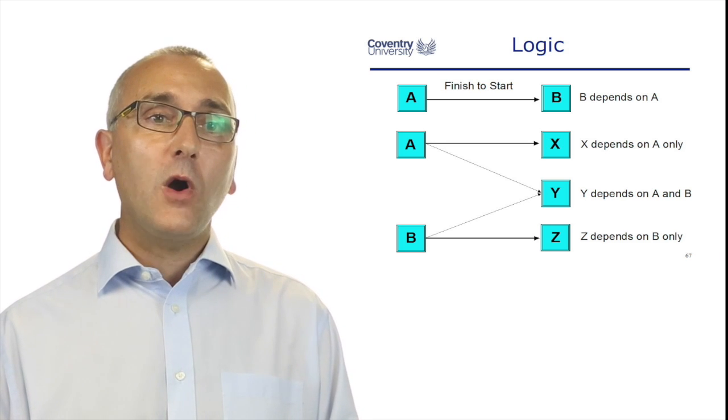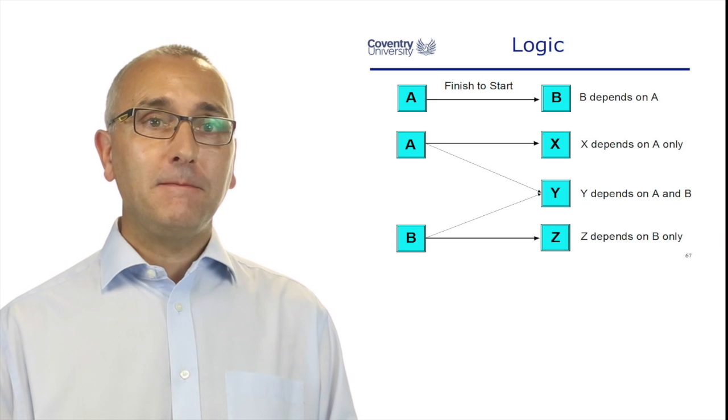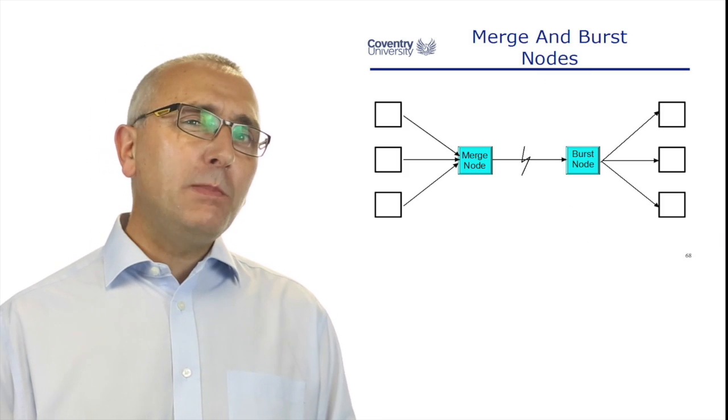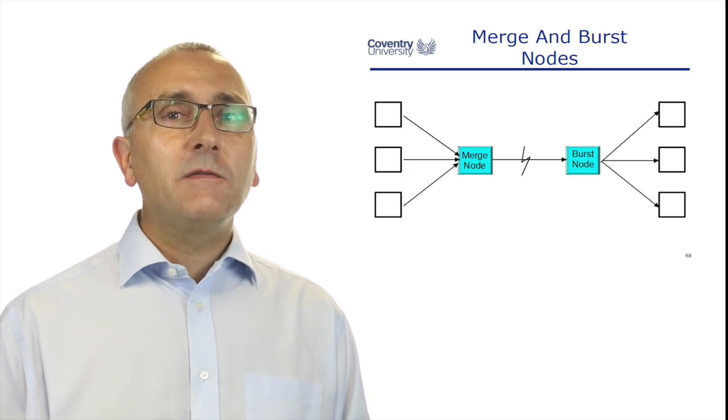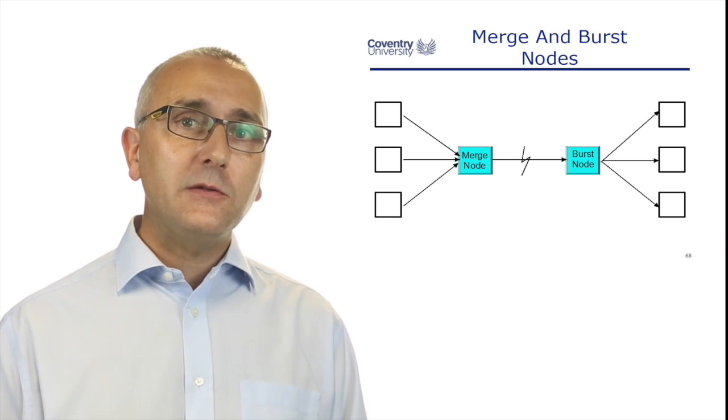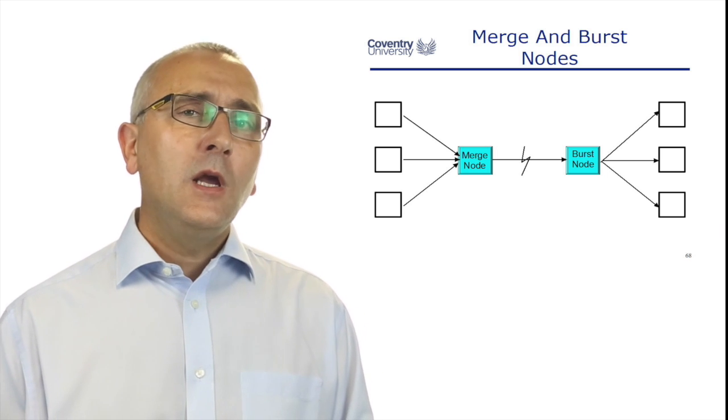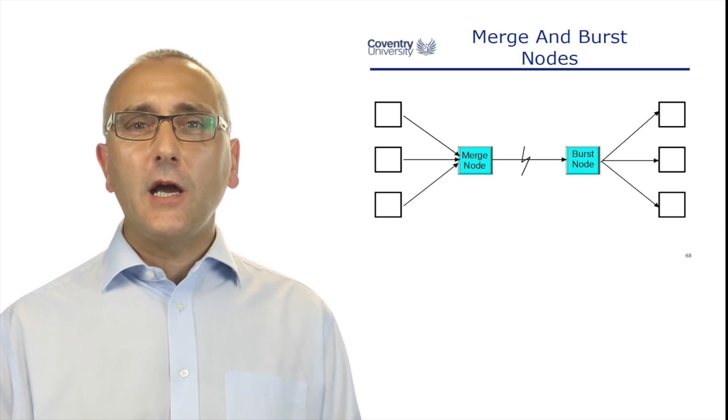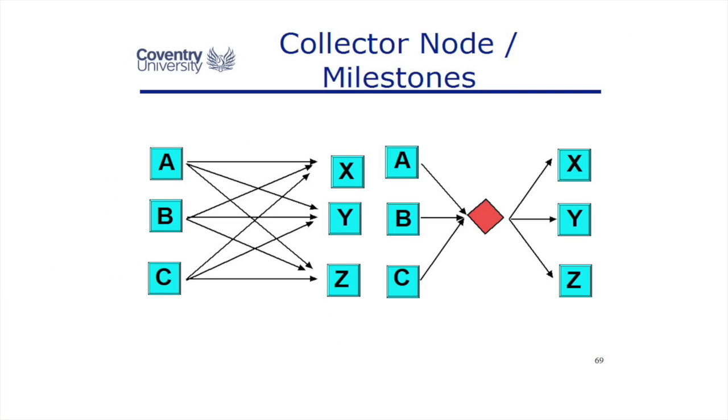You could create very complex diagrams, and as we shall see, one way of doing this is using post-it notes and whiteboards. You sometimes find that the dependency lines get all over the place. In this example, X, Y, and Z can't start until A, B, and C is finished. If we look at it, X can't start till A, B, and C is finished, Y can't start till A, B, and C is finished, and Z can't start till A, B, and C have finished.